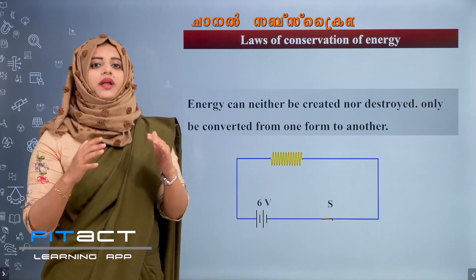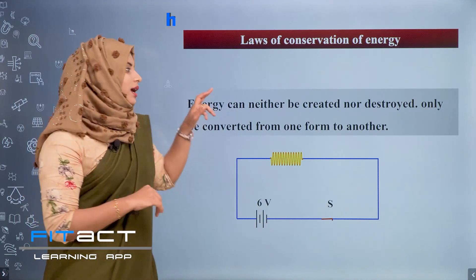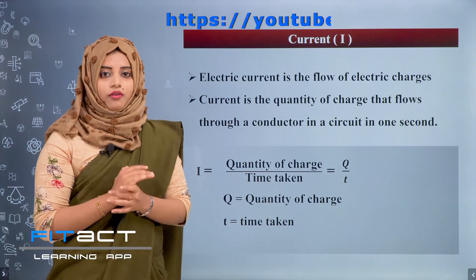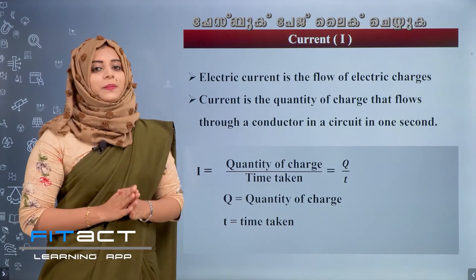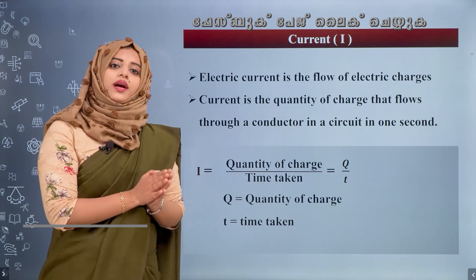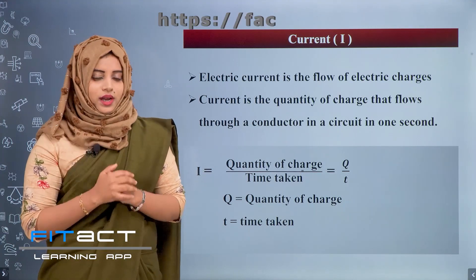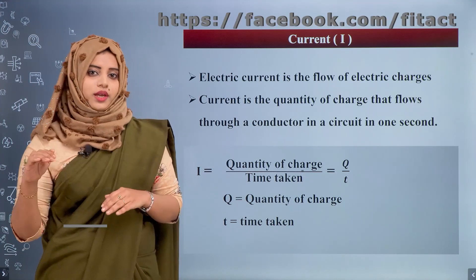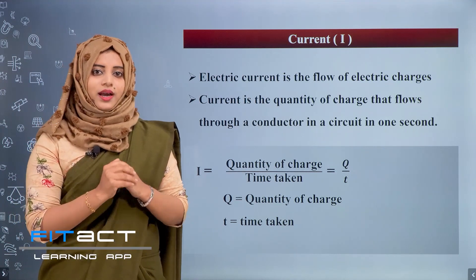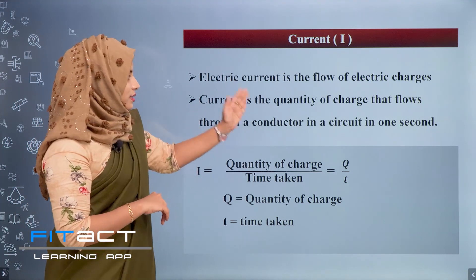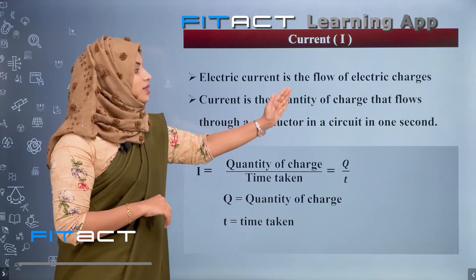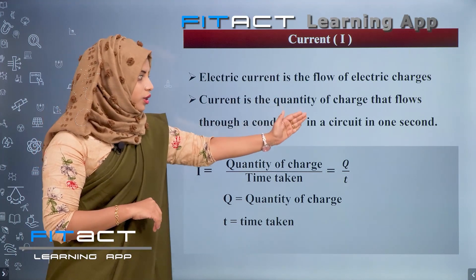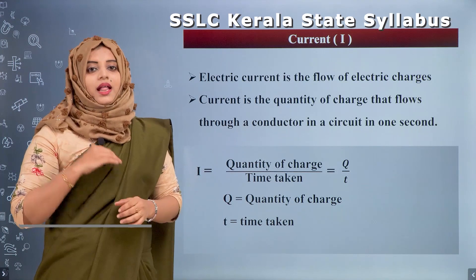Let me explain what is current and voltage. Current, or intensity of electric current, is denoted by I. Electric charge in flow is electric current. That is, the quantity of charge that flows through a conductor in a circuit in one second.